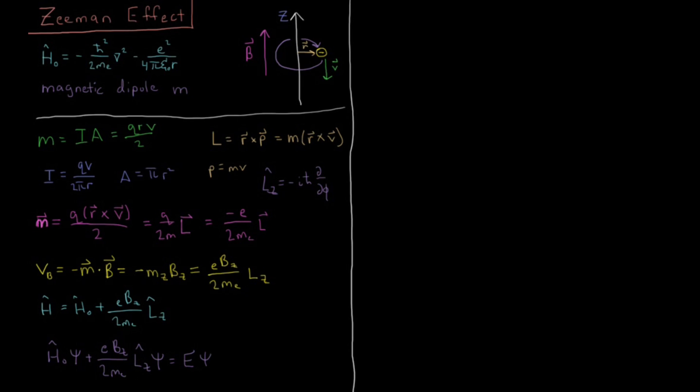And luckily, the eigenfunctions of the Hamiltonian for the hydrogen atom are also eigenfunctions of Lz. So our original eigenfunctions are going to be eigenfunctions of this new Hamiltonian as well. So we don't have to define new eigenfunctions, we just have to define what the new eigenvalues are, what the energies are going to be.